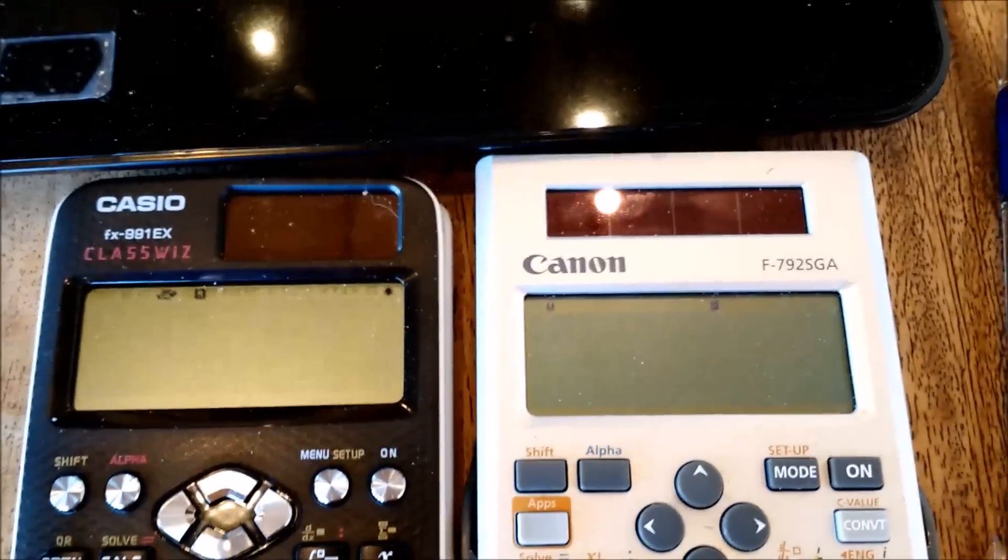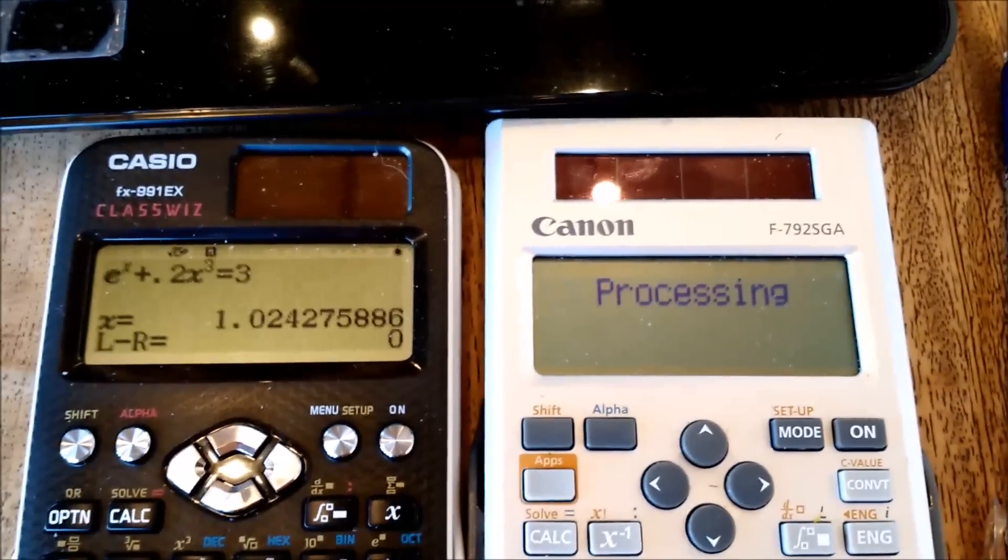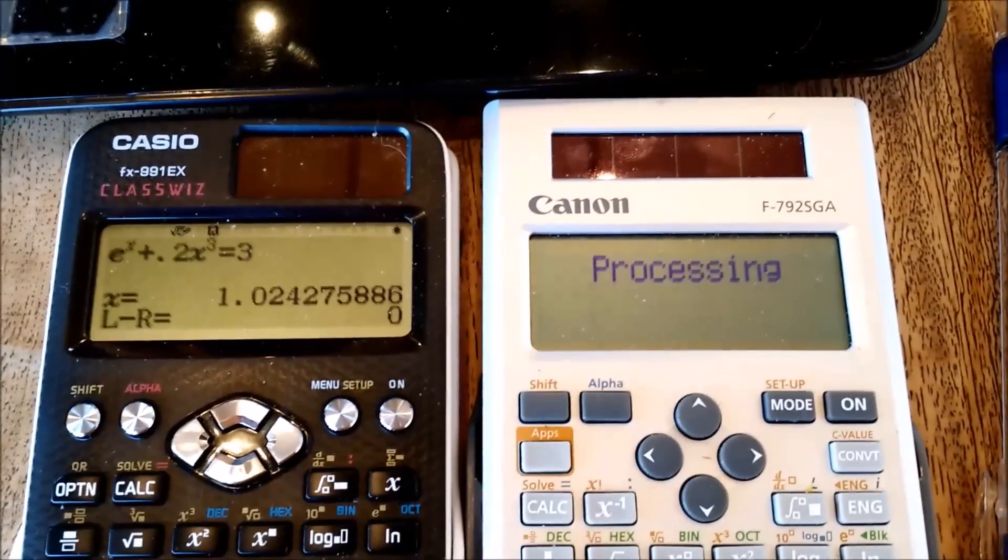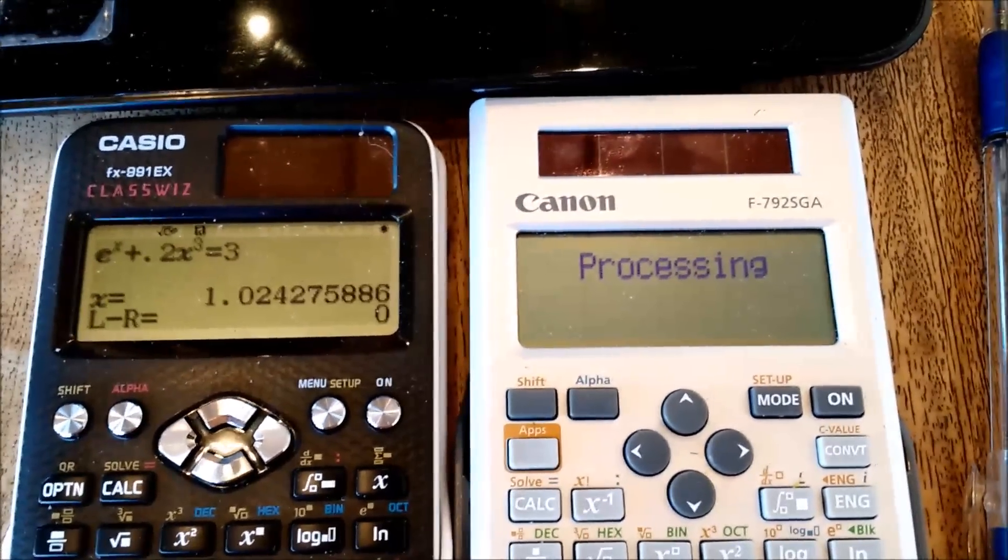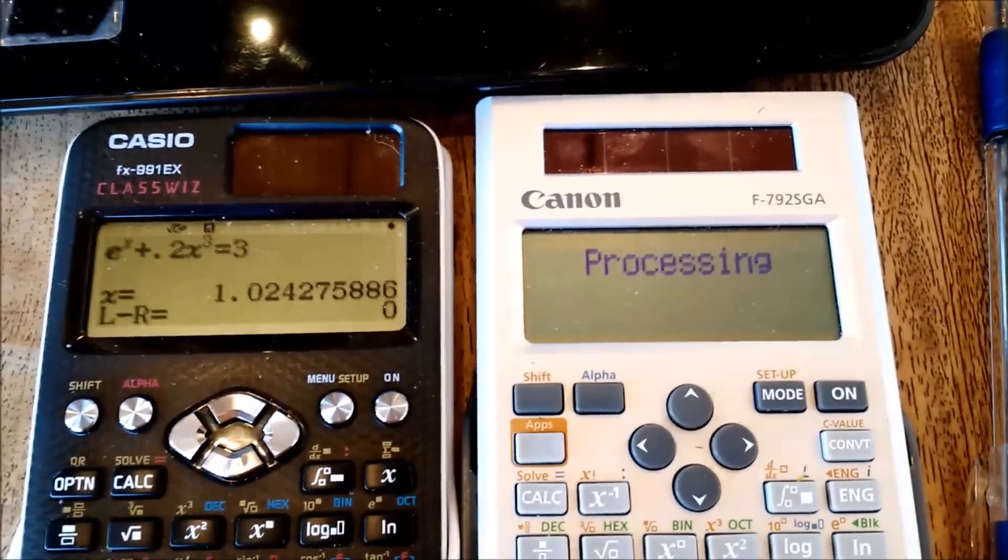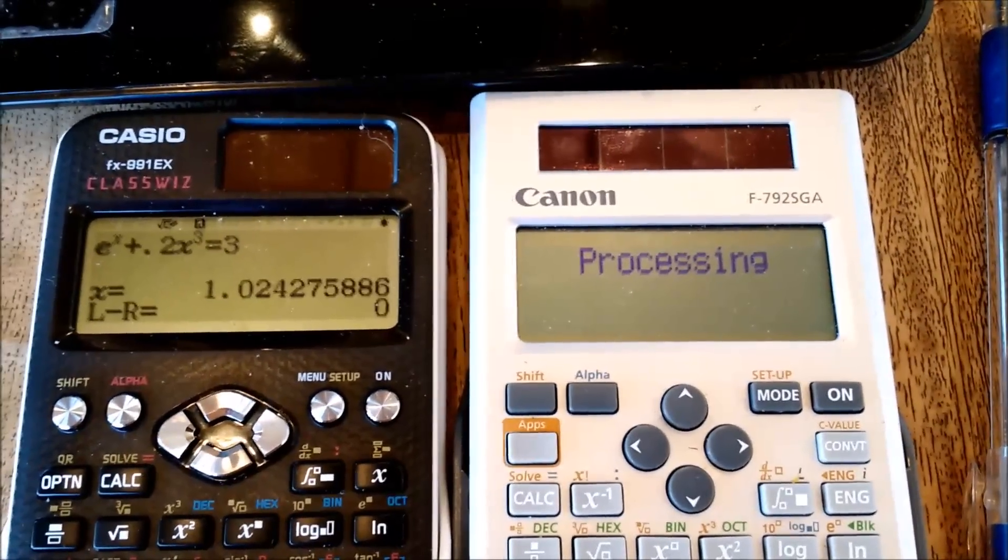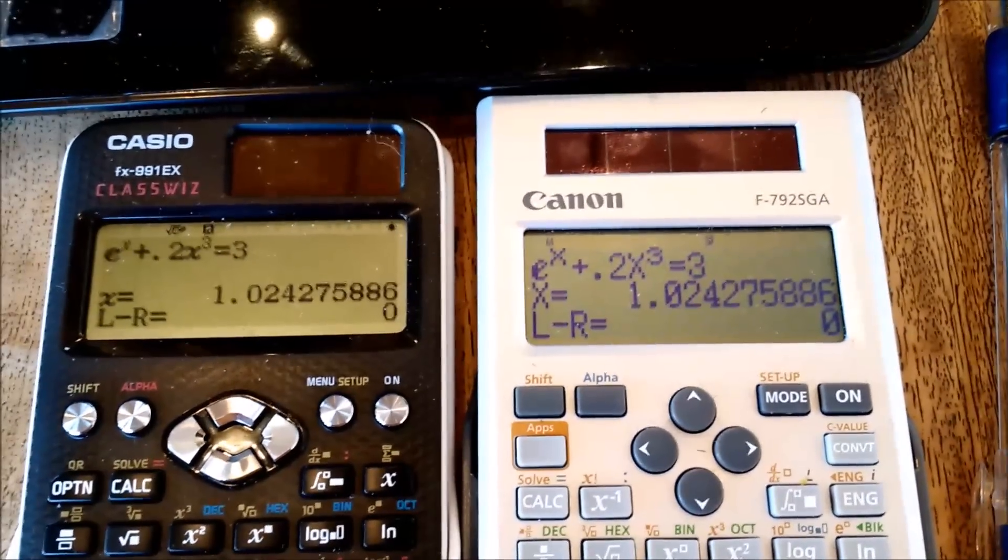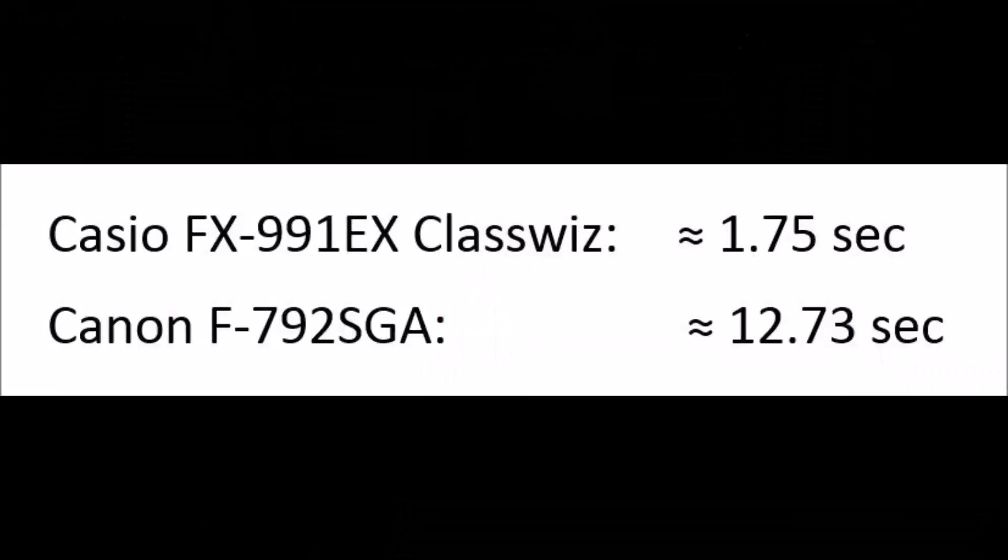I'm going to press enter and the Classwiz with the faster processor gives me the answer, beating the Canon. Canon still processing and returns the answer. So the results are the Classwiz about 1 and 3 quarters of a second, the Canon took about 12.73 seconds.